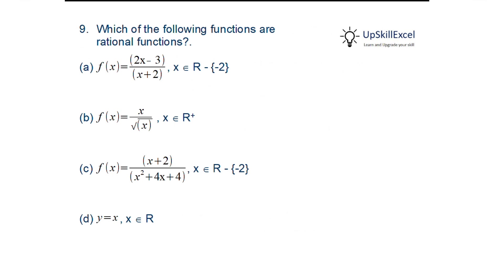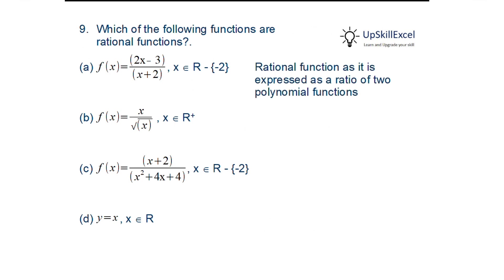Which of the following functions are rational functions? Rational functions are defined as those that can be expressed as a ratio of two polynomial functions. f(x) = (2x−3)/(x+2): both numerator and denominator are polynomial functions, so this is a rational function. A function expressed as a ratio of polynomials qualifies as a rational function.